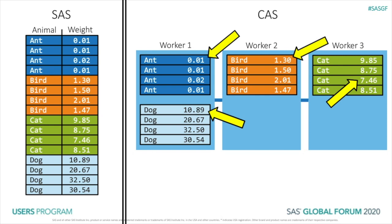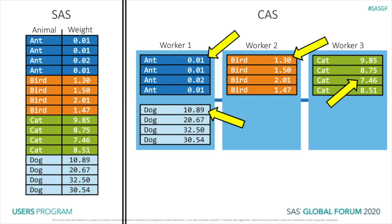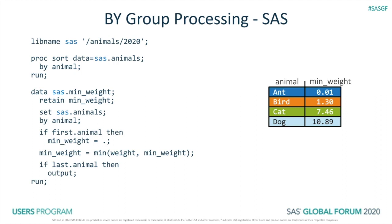Here's the SAS program that we use to do this, and then we'll convert it to run in CAS. I'm using a libname statement to create a libref to where my data is stored. Proc sort — I'm going to sort the animals data set by the type of animal. And then my data step uses first and last dot processing. We need to have a by statement. On the first row of a group, we're going to set the minimum weight to missing. Then we compute the minimum weight, and on the last row of the group, we output a row. And we get these results, which are the minimum weights for each kind of animal.